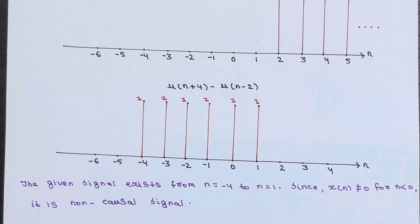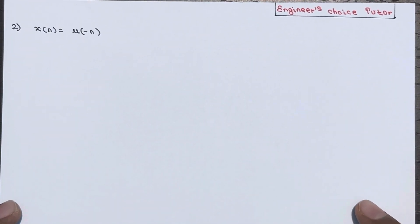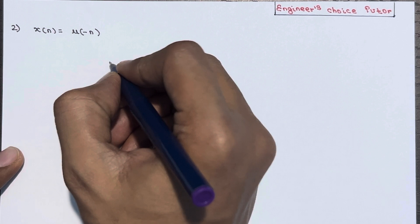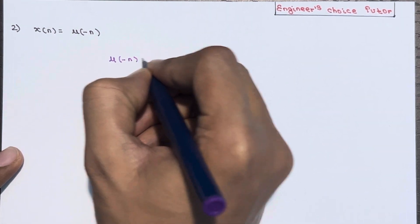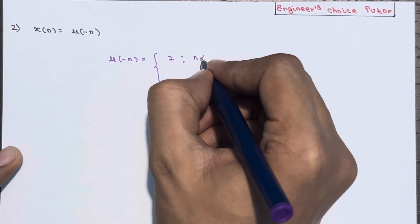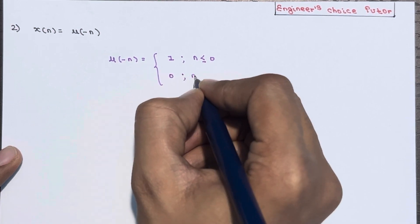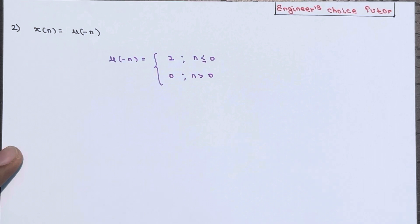This is the first example. Now let's see one more example. The signal is given as x of n equal to u of minus n. Now, u of minus n is equal to 1 when n is smaller than equal to 0, and 0 when n is greater than 0.